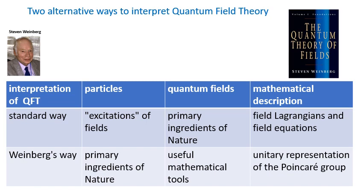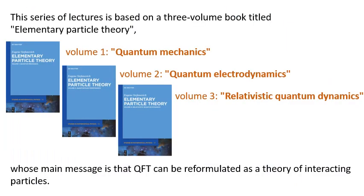Luckily, there is another way to look at QFT. This approach was developed by Weinberg in the middle of the 1960s and is presented in his famous textbook. The primary ingredients of nature are particles. Quantum fields also play an important role, but their role is technical rather than fundamental. The whole approach is based on Wigner's idea of unitary representations of the Poincaré group, which we will discuss in the next lecture.